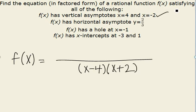For our horizontal asymptote, that 2/3 is just going to be our coefficient on this fraction, the 2 and the 3.